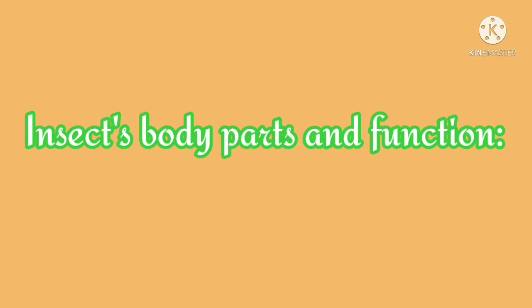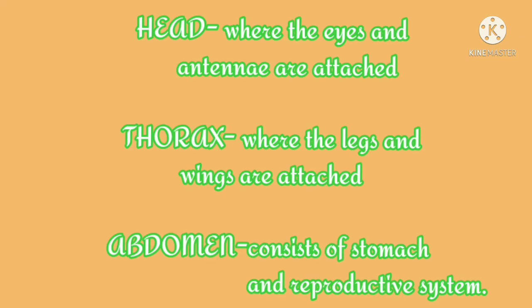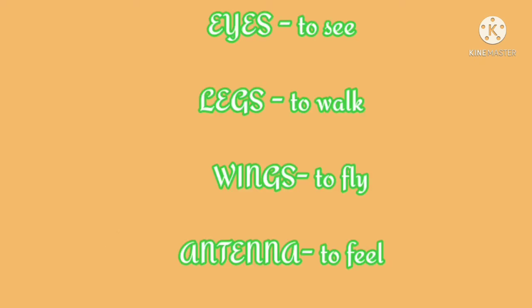Now let us take a short recap about insect body parts and their functions. Head — where the eyes and antennae are attached. Thorax — where the legs and wings are attached. Abdomen — consists of the stomach and reproductive system. Eyes are used to see, legs to walk, wings to fly, and antennae to feel.